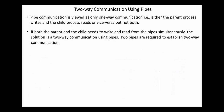Pipe communication is one-way: either the parent process writes and the child process reads, or vice versa, but not both simultaneously. If both the parent and child need to write and read from pipes at the same time, the solution is two-way communication using pipes. In this case, two pipes are required to establish two-way communication.